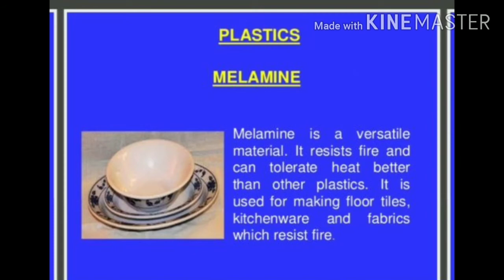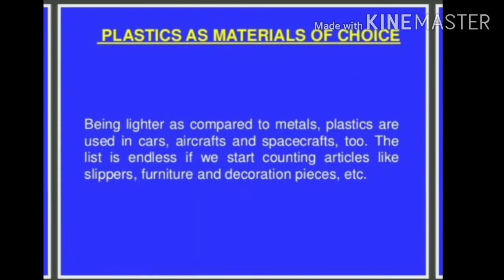Another very famous plastic is melamine. Melamine is a versatile material — it resists fire and can tolerate heat better than other plastics. It is used for making floor tiles, kitchenware, and fabrics to resist fire. Plastics can be used as a material of choice as they are lighter compared to metals, and are used in cars, aircraft, and spacecraft too.